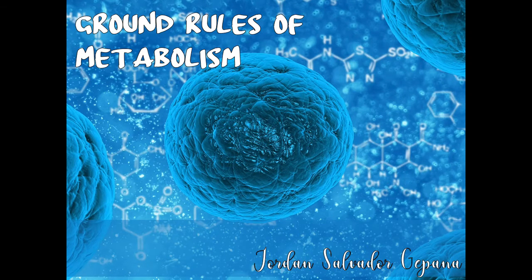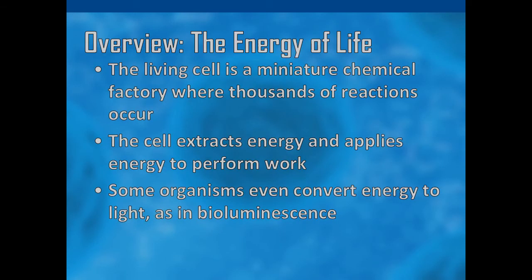We will also be discussing the ground rules for metabolism. Here is an overview of why the cell is an optimal site for metabolism: the living cell is a miniature chemical factory where thousands of reactions occur; the cell extracts and applies energy to perform work; and some organisms even convert energy to light, as in bioluminescence. These core concepts serve as the foundation of how metabolism occurs within the cell.